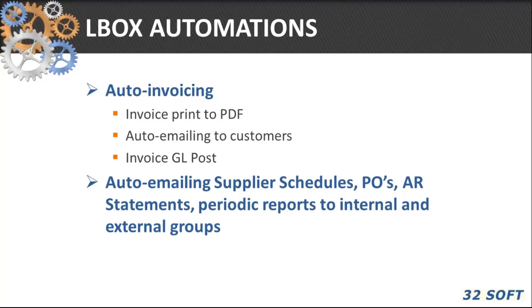Now let's talk about automation — what you can automate. First off, you can automate the entire invoicing process in QAD: generating and distributing invoices electronically, plus invoice GL post reporting as well. You can also benefit by automating the generation and distribution of supplier schedules, purchase orders, receivable statements, and in fact any documents that need to be generated and distributed out of QAD. Plus, you can set up periodic reports to internal and external groups of people.